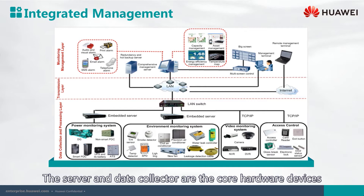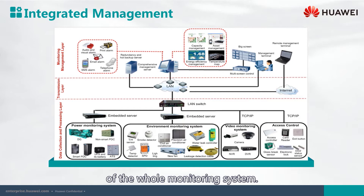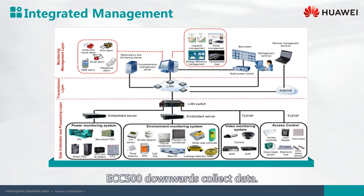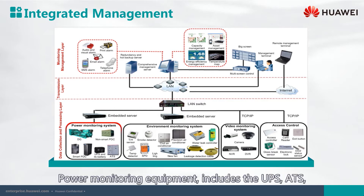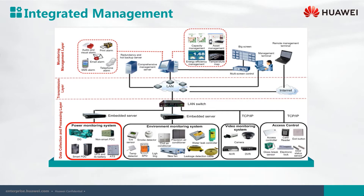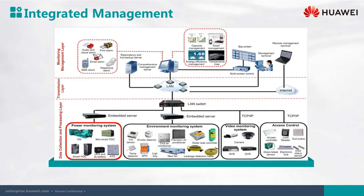The server and data collector are the core hardware devices of the whole monitoring system. The data collector, such as the ECC 800 and ECC 500, collects data downwards. Power monitoring equipment includes the UPS, ATS, distribution cabinet, and so on.